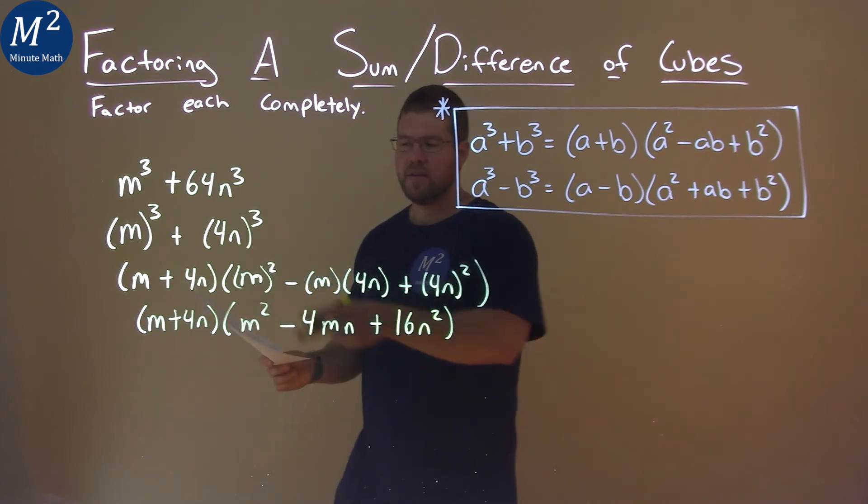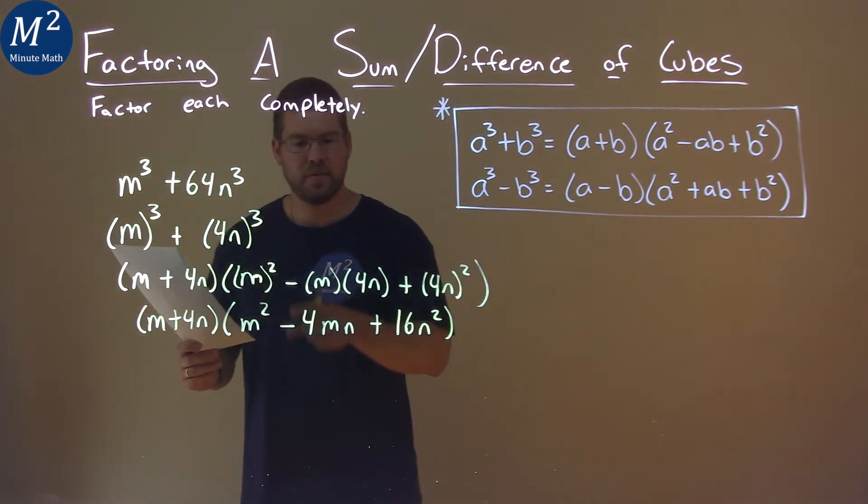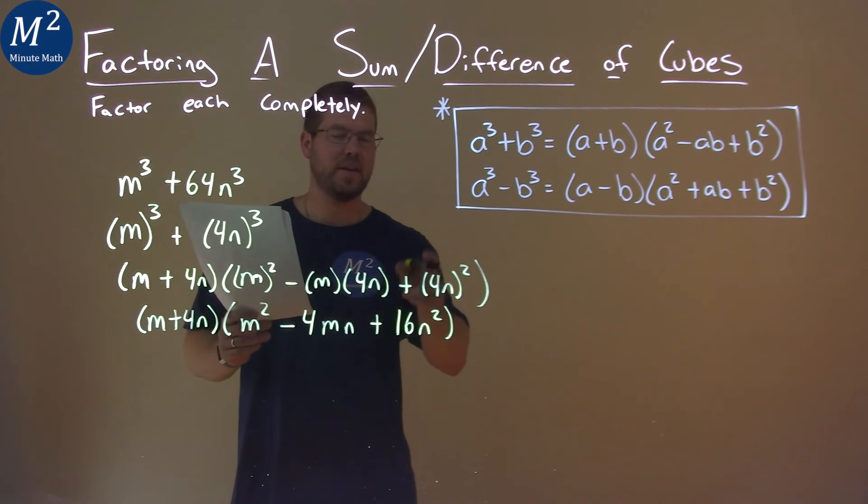And so our final answer here is m plus 4n times m squared minus 4mn plus 16n squared.